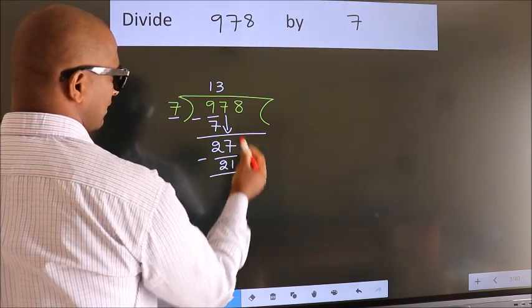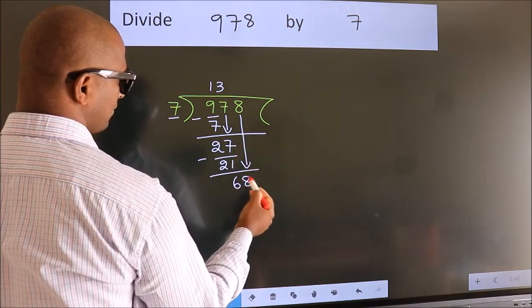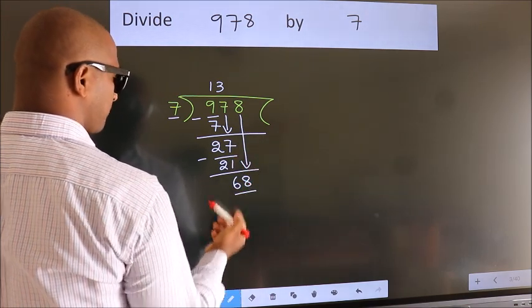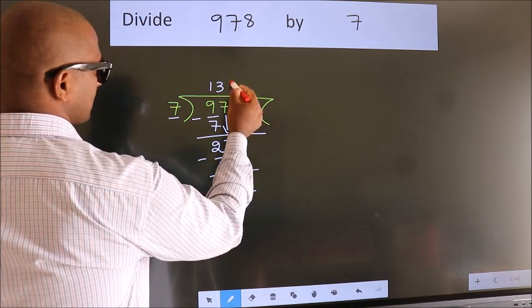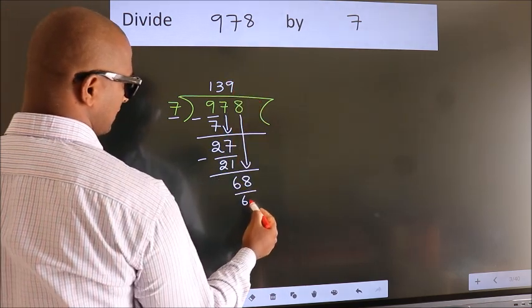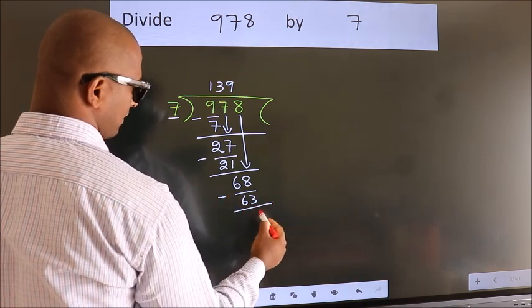After this, bring down the beside number. So 8 down. So 68. A number close to 68 in 7 table is 7 9s 63. Now we subtract. We get 5.